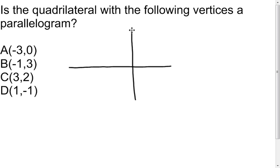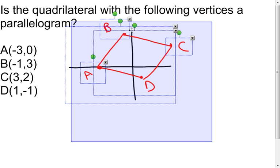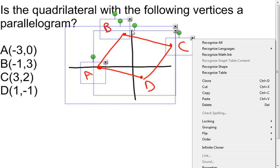I'm going to take my points. Negative three, so three to the left and zero up — here's A. Then I have to go to negative one, three — that's about there, there's B. C is going to end up at three, two. And D is at one, negative one. Here is my quadrilateral. I'm going to copy this because, like I said, I'm going to do this three different ways.